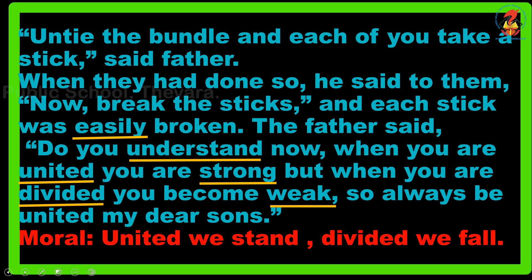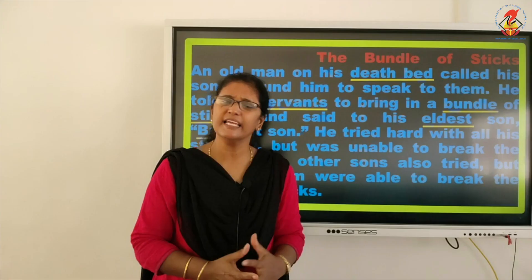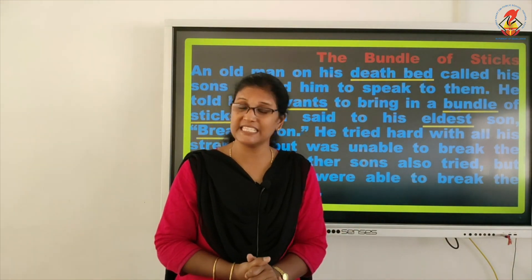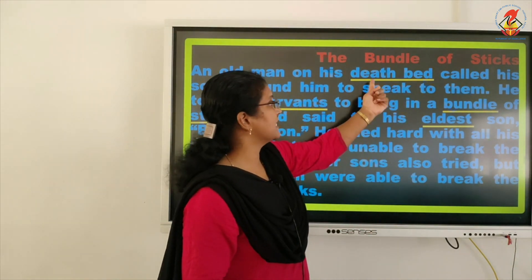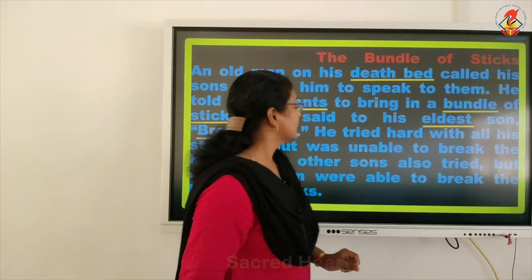Now let's see the underlined vocabulary words. First: deathbed - D-E-A-T-H-B-E-D. Deathbed means a person is about to die. He is grown old and about to die, with no energy to get up and do his work. You might have seen your grandparents or relatives when they are seriously ill and cannot get up from bed - that is called a deathbed.